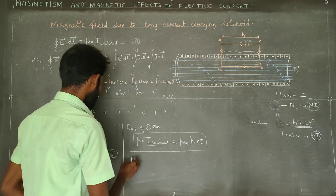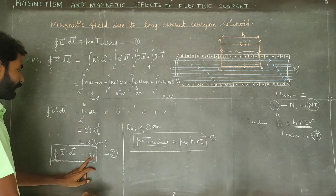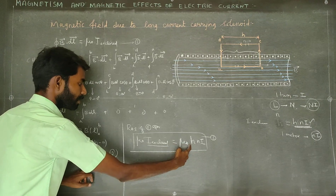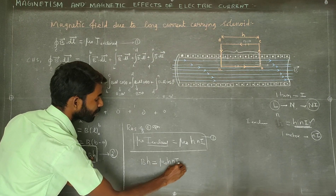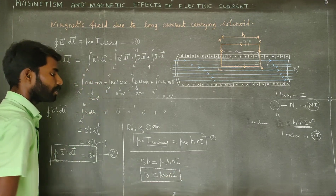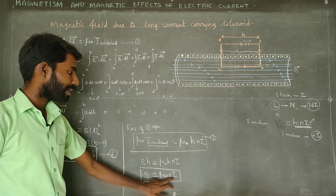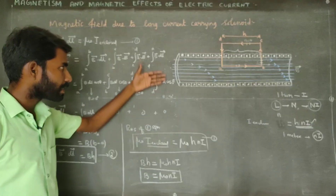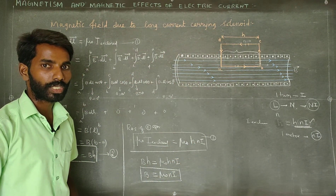Equating the left-hand side and right-hand side: Bh equals mu-zero times nhI. The h cancels, giving B equals mu-zero times n times I. This is the magnetic field due to a current-carrying long solenoid. If the solenoid has a core medium other than air, replace mu-zero with mu.